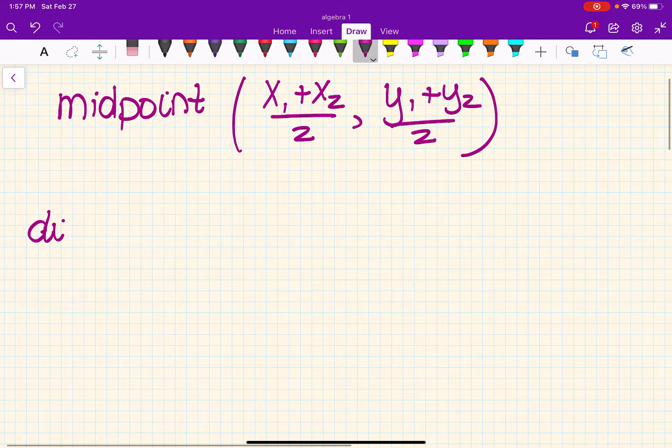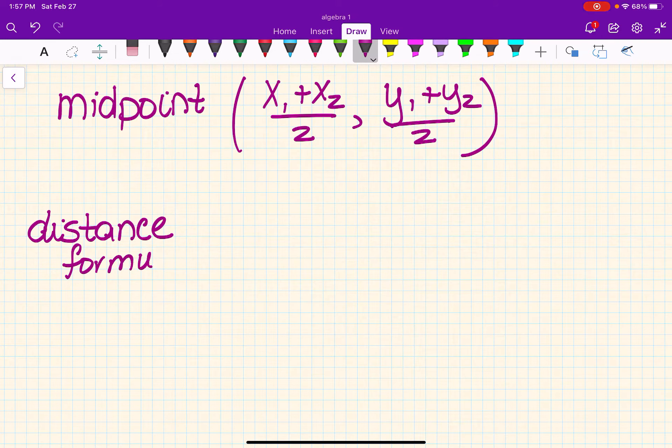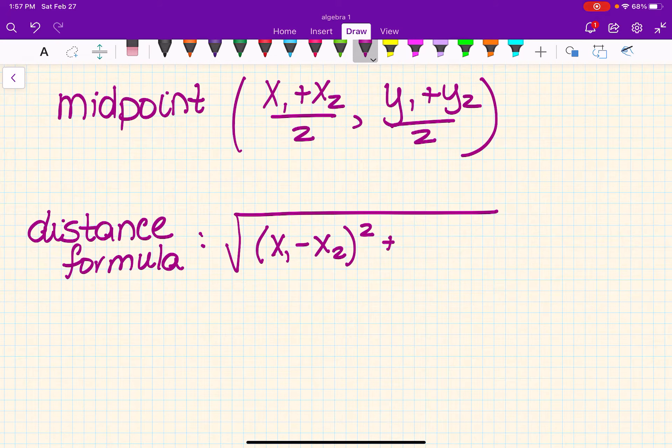Distance formula is a pain in the butt to use. Not that difficult. It's just got a lot of pieces to it. So you've got to watch your negatives on this and make sure you're careful. And again, you can do x2 minus x1. I just stick with x1 minus x2 squared plus y1 minus y2 squared.